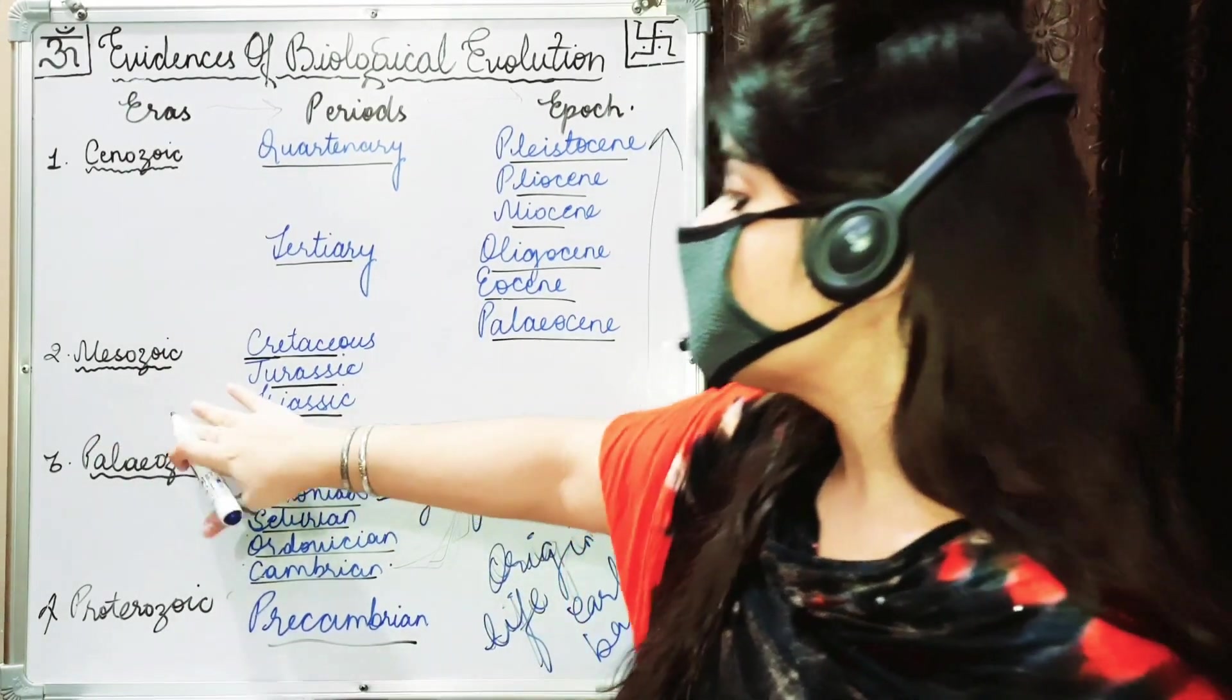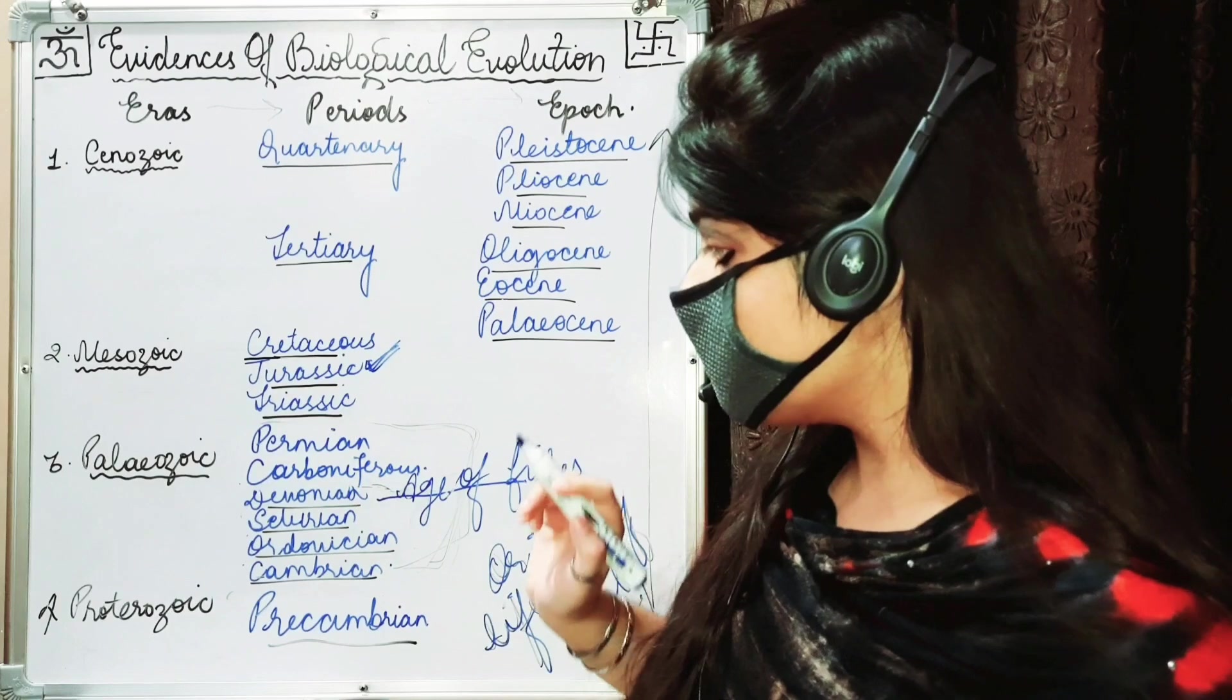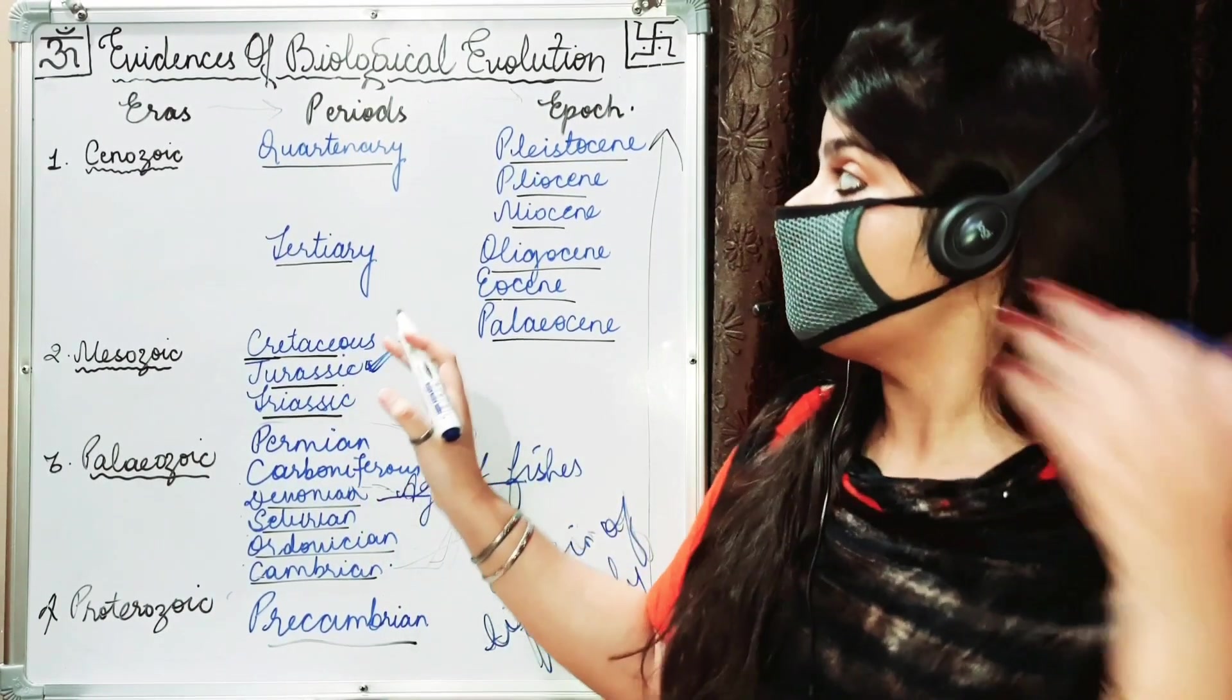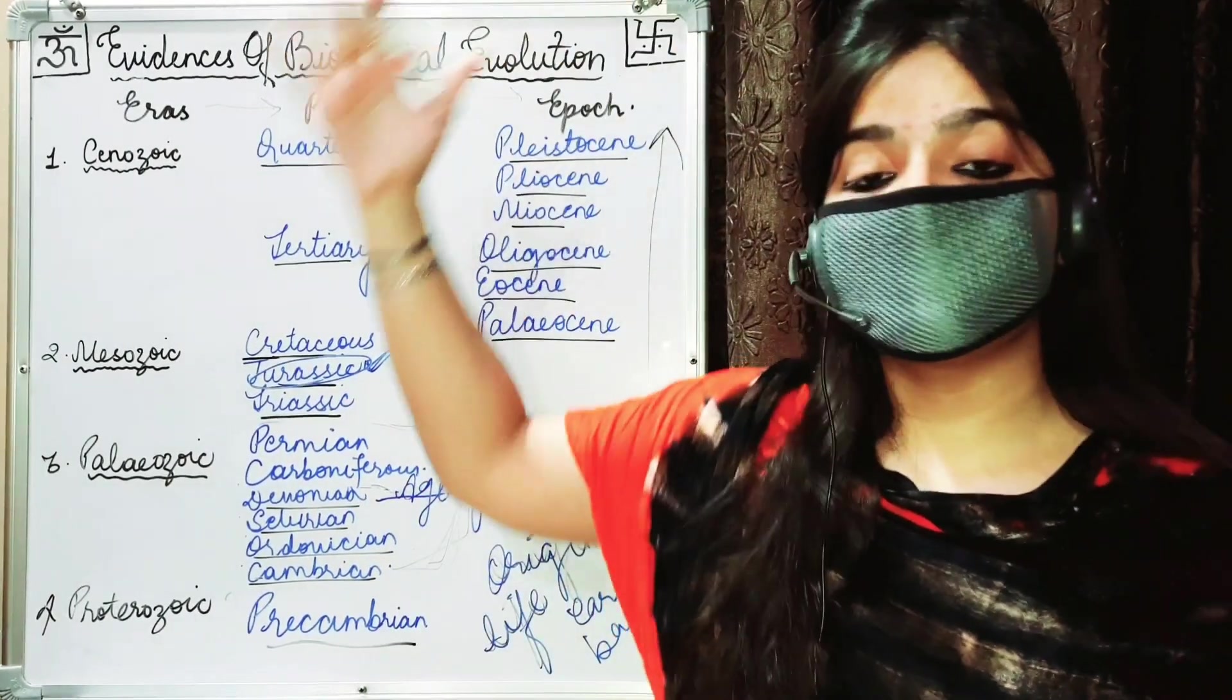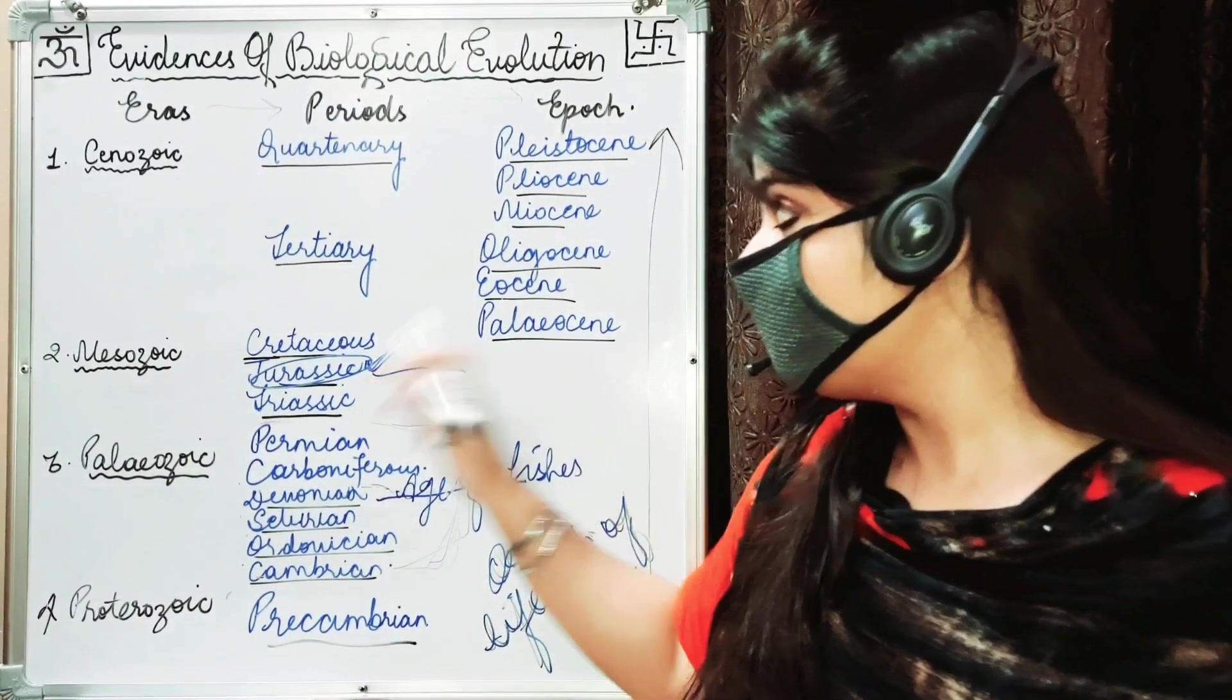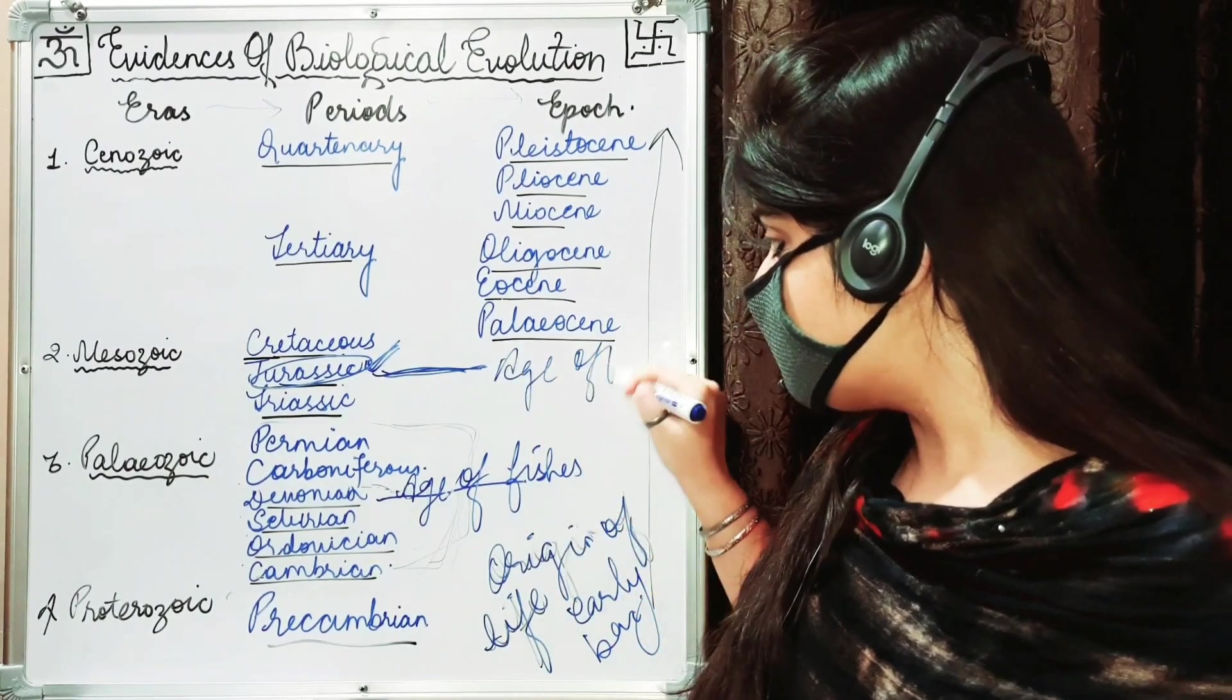Then Mesozoic. Mesozoic has three periods: Triassic, Jurassic, and Cretaceous. We always remember the Jurassic Park because we can relate to Jurassic Park that this was the period. Here it was the age of dinosaurs.